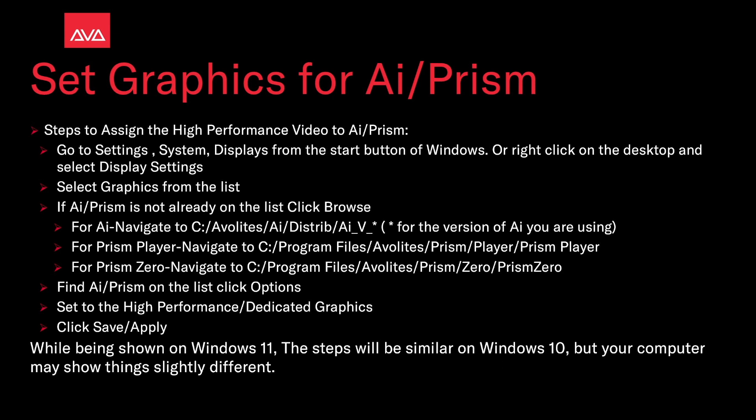For Prism Player, navigate to C drive > Program Files > Avalites > Prism Player > Prism Player. For Prism 0, navigate to C drive > Program Files > Avalites > Prism 0 and select Prism 0. Then find AI or Prism on the list, click Options, select the high performance or dedicated graphics, and click Save or Apply.